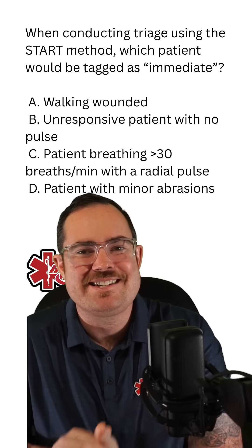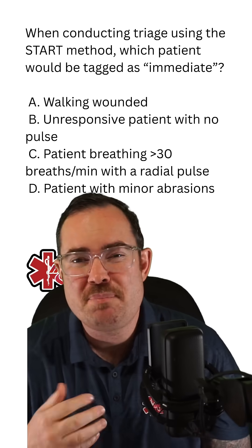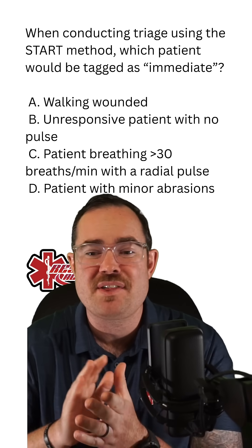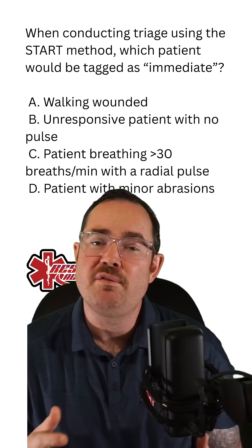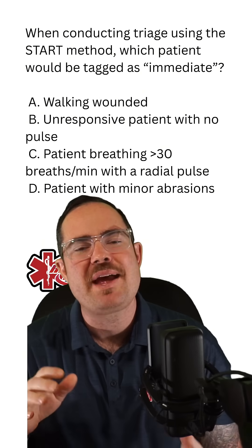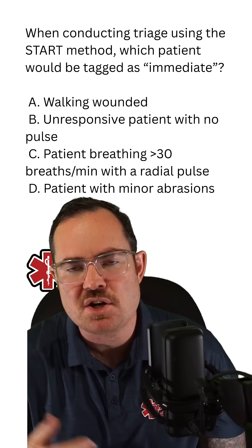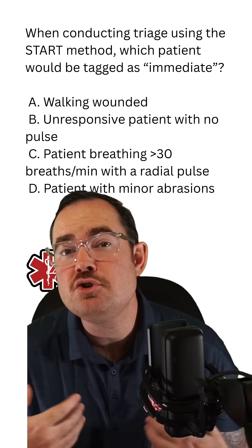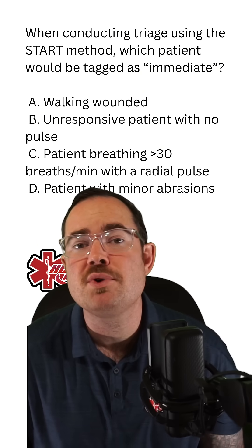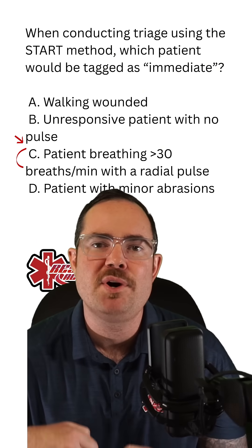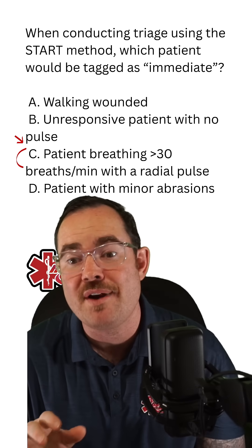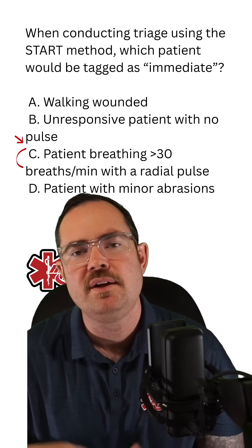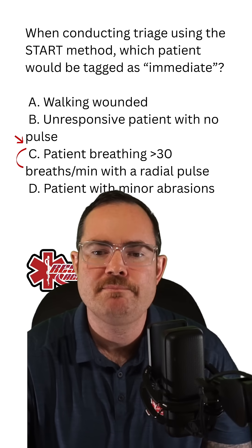With a black tag, our patient is deceased. Answer B states we have a patient who is unresponsive with no pulse. Don't forget — with adults, we're going to perform a head tilt chin lift and see if they start breathing on their own. If they do begin to breathe on their own, we would put a red tag on this patient. If they do not breathe on their own after a readjustment of the airway, we go ahead and place a black tag. Again, the answer is C.